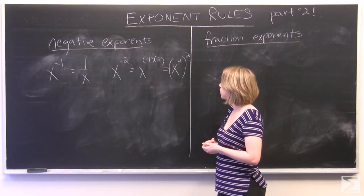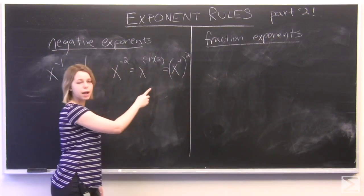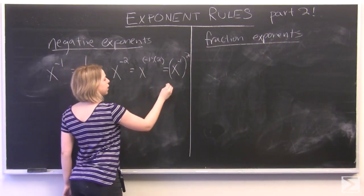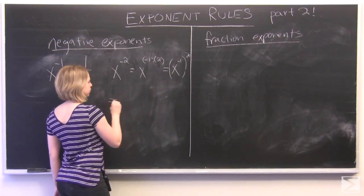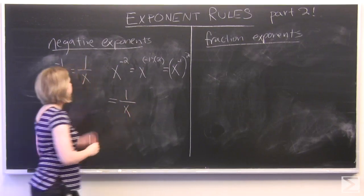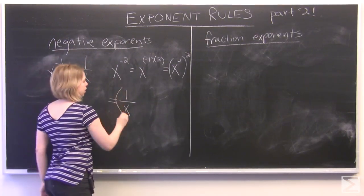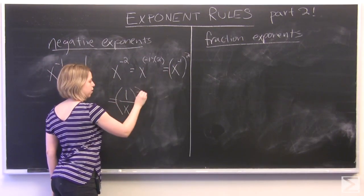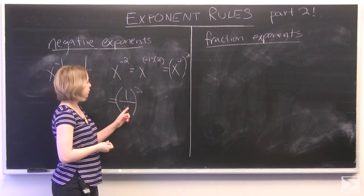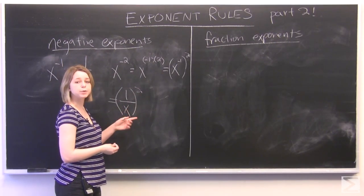What we have here is x to the power of negative 1. We can rewrite that as 1 over x as we stated here. This is being raised to the second power, so we're going to have 1 over x times 1 over x.